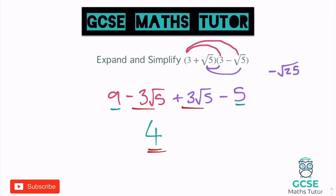This is quite a key one — if you look at the original question, they were the same brackets: one had a positive, one had a negative. So it's very similar to algebra when you have a difference of two squares. Those two middle pieces cancelled each other out, and our final answer is 4.